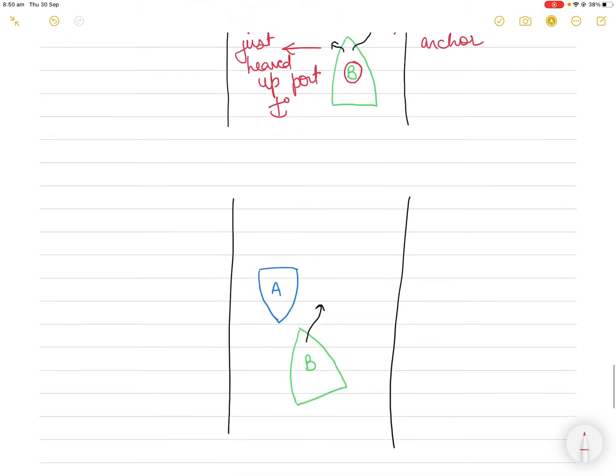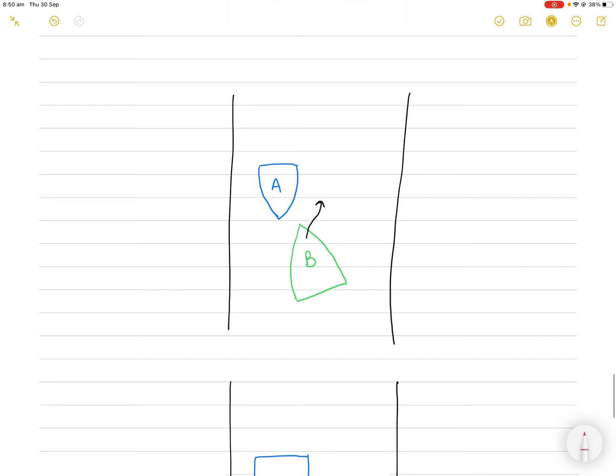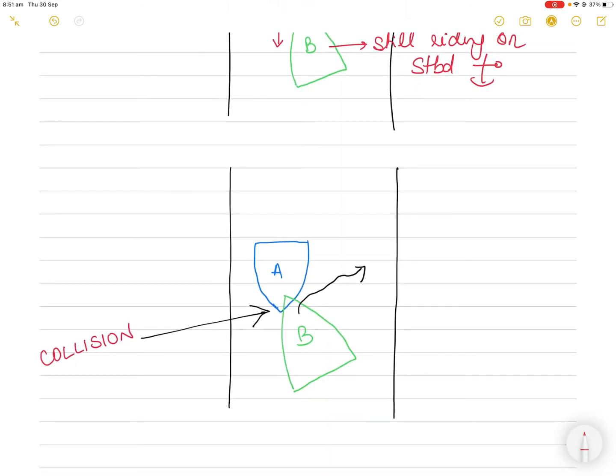Alright, so in the next diagram you can see that vessel A was proceeding as it required to, but vessel B, although she was still riding to her starboard anchor, there was a natural swing around it. In this case, the natural swing caused vessel B to swing directly into the path of vessel A. So it's still riding on starboard anchor, but it has swung in the path of vessel A.